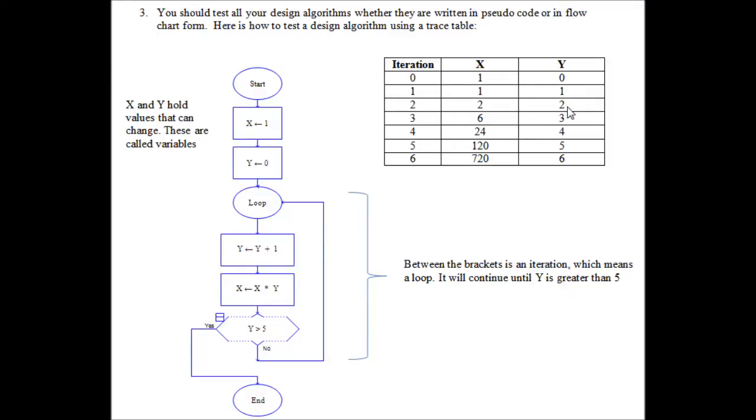So 1 is added to the value of Y, which becomes 2, and X equals X times Y. So we have 2 times 1, which now we put in the value of 2, because 2 times 1 is 2.